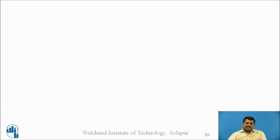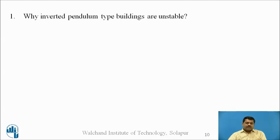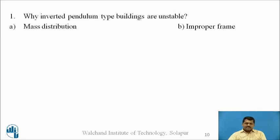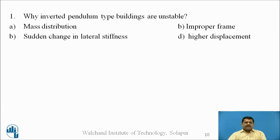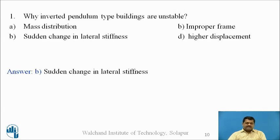A question for all viewers: please pause the video. Why are inverted pendulum type buildings unstable? There are four options — A, B, C, D. The answer is B: sudden change in lateral stiffness is what makes the building unstable.